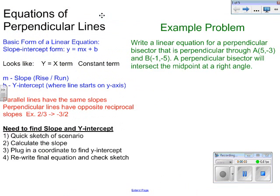This is going to be an example of how to write an equation of perpendicular lines. The first thing you need to know is that a line is the basic form, slope-intercept form, which is y equals mx plus b.